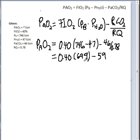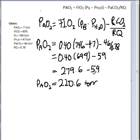So I can move on to my next step. So 40% times 699 is 279.6. Subtract 59 from that. The answer when you subtract them is 220.6 torr. So this is how you carry out the alveolar air equation.